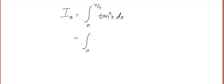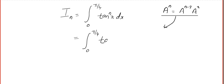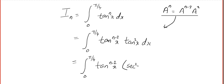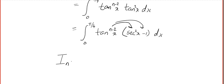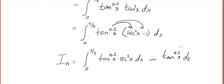Let the required integral be I_n equal to the integral from 0 to π/4 of tan to the power n of x dx. Do you remember the method for tan? We use the identity a^n = a^(n-2) · a². So here we write tan^(n-2)(x) times tan²(x) dx. What we do next is convert tan²(x) into sec²(x) minus 1. Remember, the procedure is still the same.